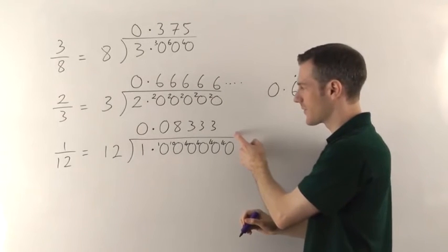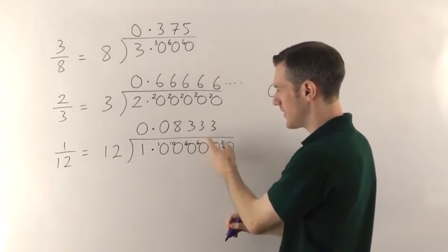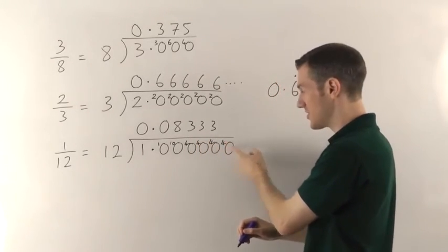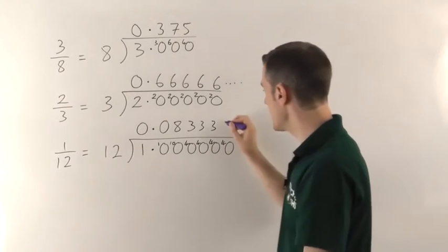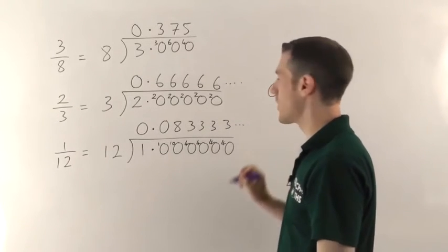These 3s are just going to keep going on forever because it always goes in 3 times remainder 4. 3 times remainder 4. 3 times remainder 4. The 0s go on forever so the 3s will also go on forever.